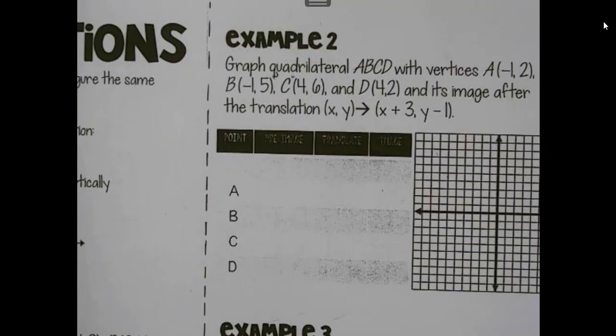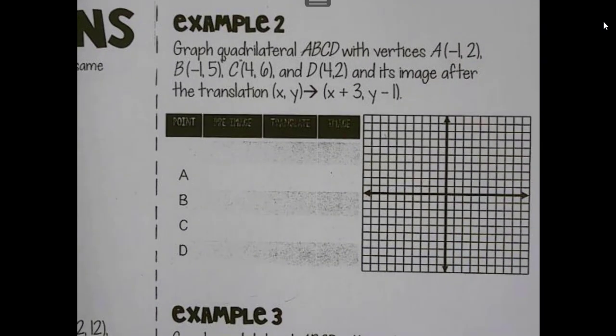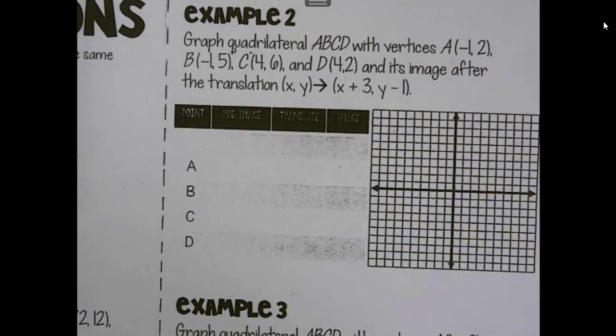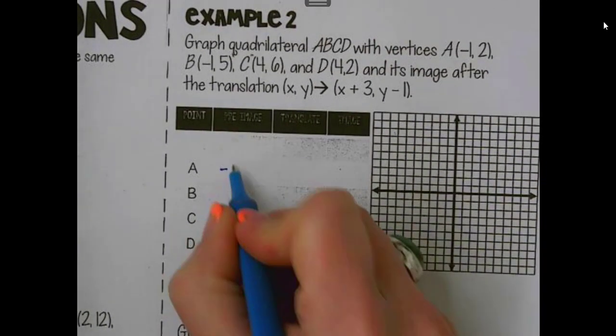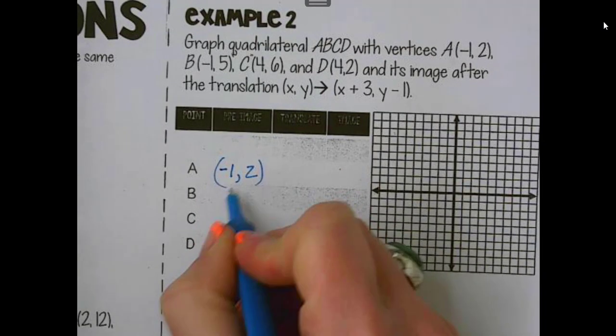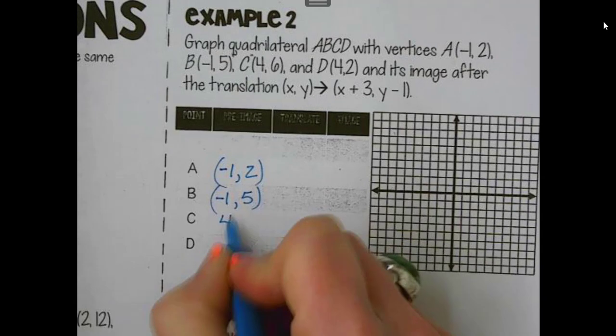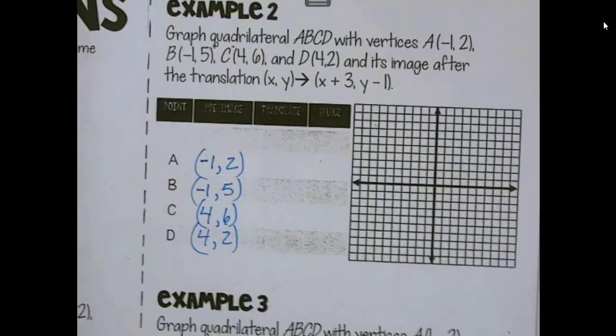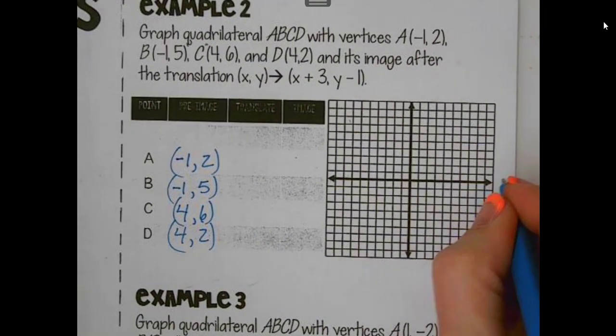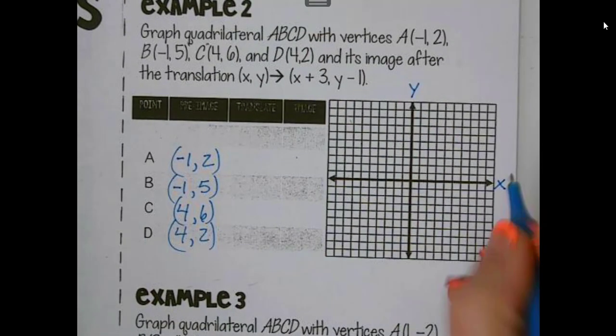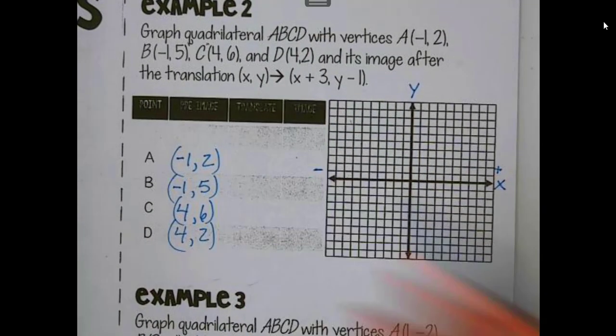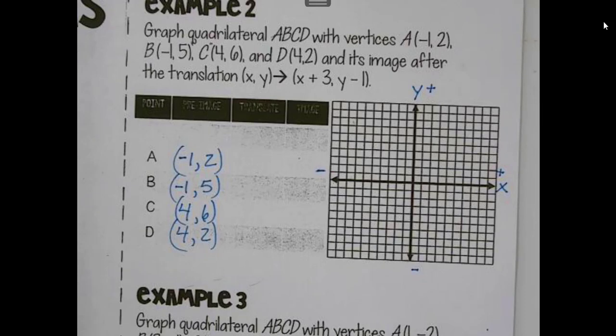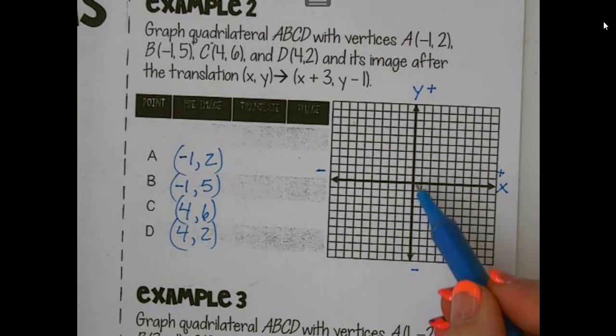So example 2. We're going to actually graph this. Now I'm going to put the pre-image in. So we'll use two colors on this one. So my pre-image, I'm going to just put in our ordered pairs. And I'm going to plot those. Just to remind you, this is x, this is y, plus, go to the right, minus, go to the left, up is positive, negative is down. Always start at 0, 0.